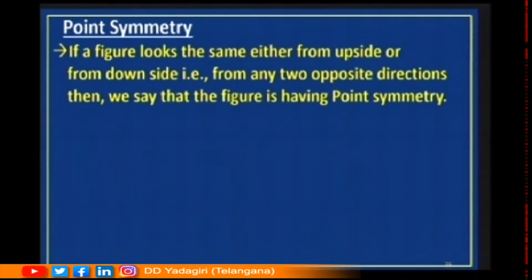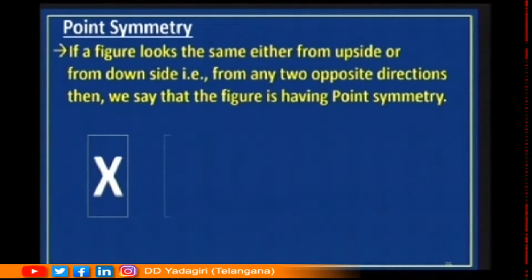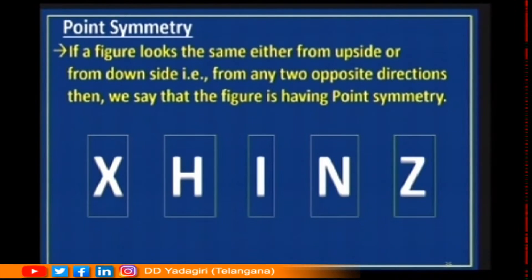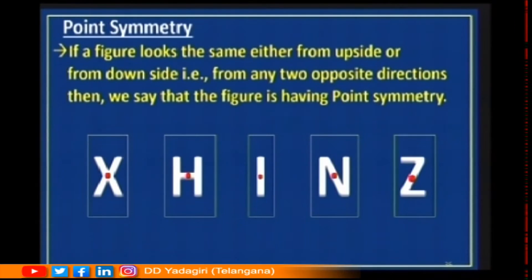Now let us understand point symmetry. If a figure looks the same from any two opposite directions — from upside or downside — then the figure has point symmetry. Looking at English alphabets on screen: X, H, I, N, Z — when you observe X from upside or downside through a center point it looks the same, so X has point symmetry. Similarly H, I, N, and Z all have point symmetry.